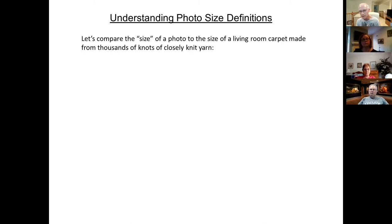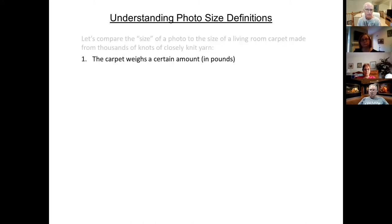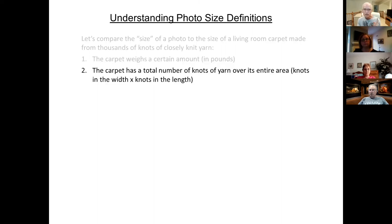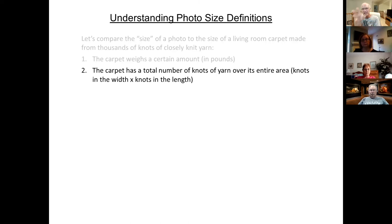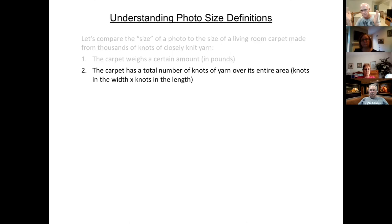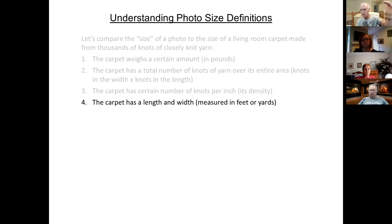I'm going to relate photo size to the size of a living room carpet made from thousands of knots of closely knit yarn. The carpet weighs a certain amount in pounds — that's the first measure of its size. The carpet has a total number of knots of yarn over its entire area — knots in the width times knots in the length. If you have 100 knots each way, that's 10,000 total knots. The carpet also has a certain number of knots per inch — that's the density. And finally, the carpet has a certain length and width, measured in feet or yards.